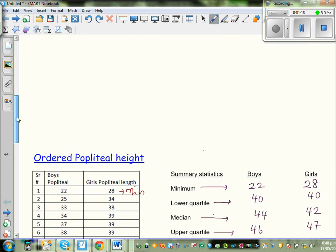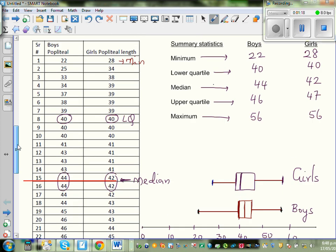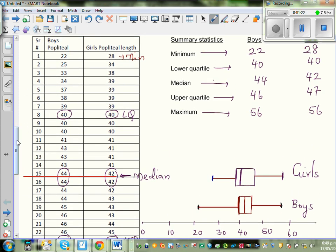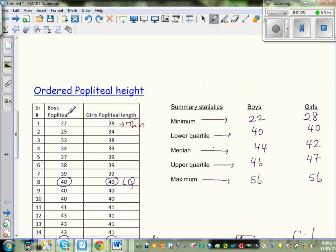So what I did is I used Excel to order it and I have calculated the statistic. So this is the ordered popliteal height for boys and girls.